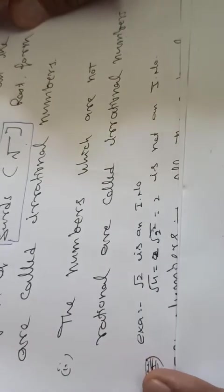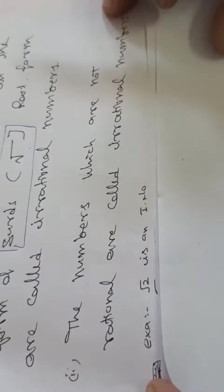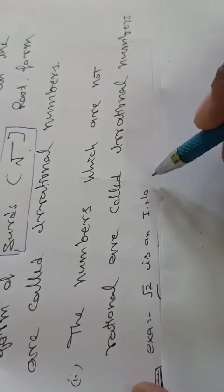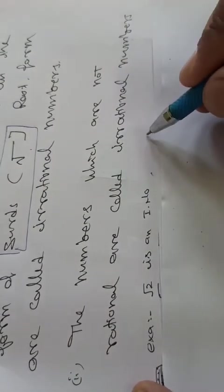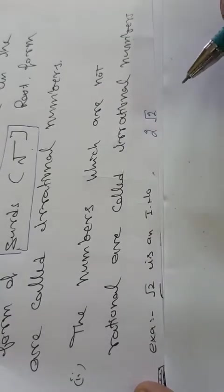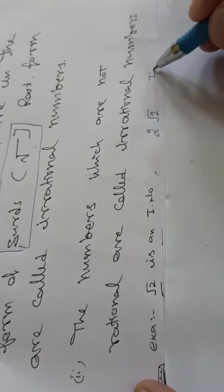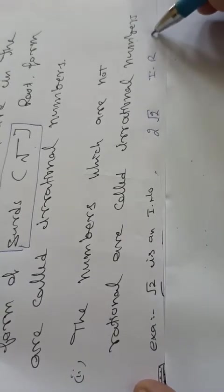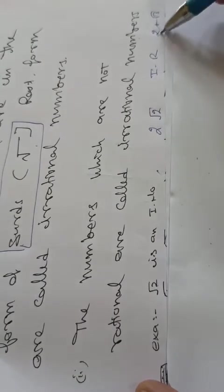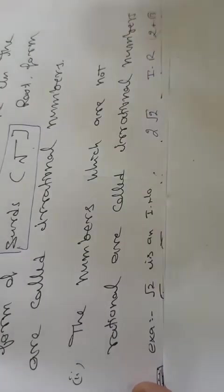For example, maanlejiye main ek value leeta hoon root 2. Root 2 pure root form mein hai, isliye ye ek irrational number hai. Maanleejiye agar main is tariqe se likhou, 2 root 2 ek value hai, yeh bhi ek irrational number hai. Agar main likhou 2 plus root 3, ye value bhi ek irrational number hai. Matlab jahan root value aagayi, woh ek irrational number hai.